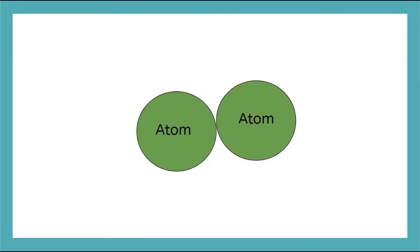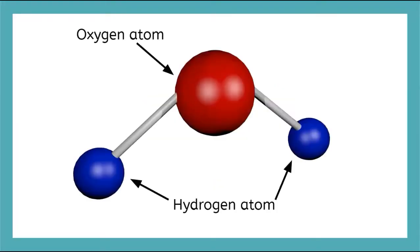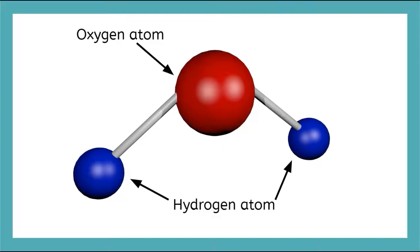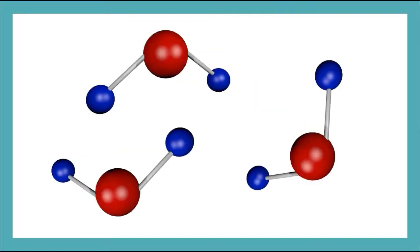A molecule is just two or more atoms stuck together by something called a bond. Probably the most famous molecule is the water molecule, also known as H2O. That's because two hydrogen atoms bond tightly together with one oxygen atom. Now that we know what matter really is — just atoms and molecules — we can look at the different states we can find matter in.